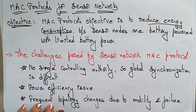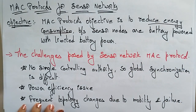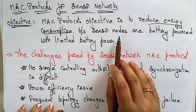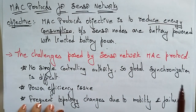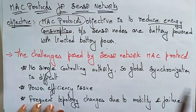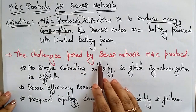The sensor nodes present in the network are battery powered. Whatever sensor technology you are taking, each sensor works based on battery power. So to reduce that energy consumption with limited battery power, we use MAC protocols. The main objective of MAC protocols in sensor networks is to reduce energy consumption because the sensor nodes are battery powered with limited battery.